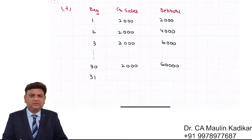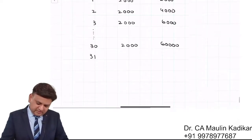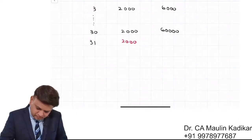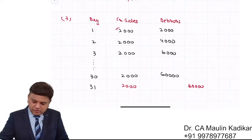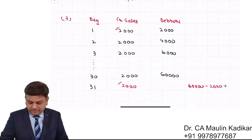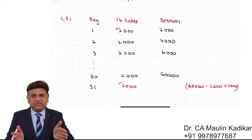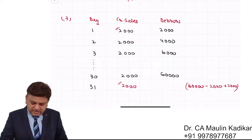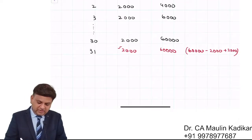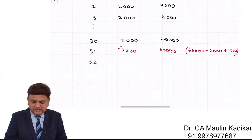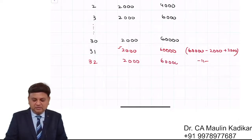After 31 days of business, what would be the debtors? Sales will again be ₹2,000. Opening debtors are ₹60,000. The first day's sales will now be collected — bank account debited, debtors reduced by ₹2,000 — but ₹2,000 of new sales is also added. So: ₹60,000 minus ₹2,000 plus ₹2,000 equals ₹60,000 again. From the 32nd day onwards the same story repeats and debtors remain ₹60,000.